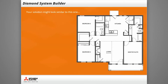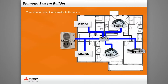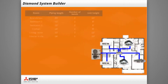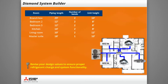Your solution might look similar to this one: MSZ-06s in each bedroom, SLZ-12s in the living room and kitchen, and an SCZ-12 in the master suite. Outside, an MXZ-5C42 hyperheat with a branch box. In addition to the units, your design will also include line set lengths, number of bends, and unit heights. Before installation these values are generally estimated, but once installed you should revise these values to ensure the proper refrigerant charge and functionality of the entire system.